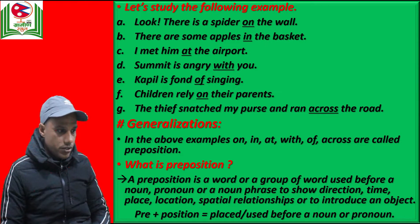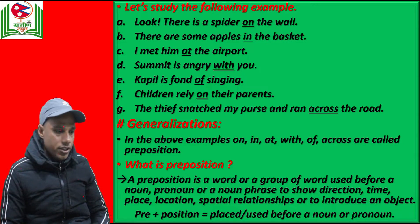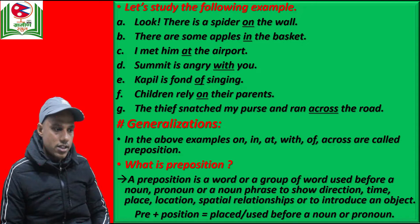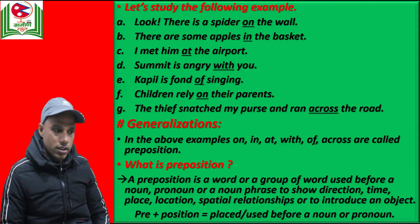I have some examples for you. In number A we have: look, there's a spider on the wall. Number B: there are some apples in the basket. Number G: I met him at the airport. Next: Sumit is angry with you. Kapil is fond of singing. Children rely on their parents. Number G: the thief snatched my purse and ran across the road. In these examples, you can notice some underlined words — on, in, at, with, of, on, across. These words are some examples of prepositions.